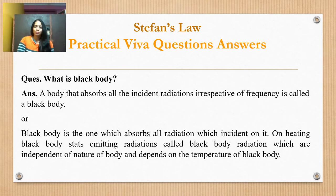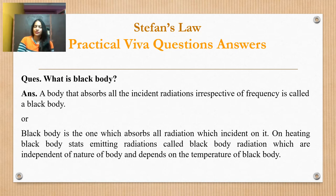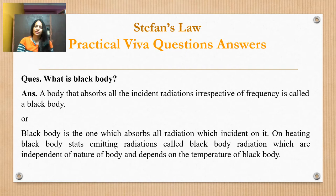On heating a black body, it starts emitting radiation called black body radiation, which are independent of the nature of the body and depend on the temperature of the black body. When we heat the black body, there are radiations from various wavelengths, and as we keep increasing the temperature, the intensity and density of the emitted radiation also increases. This is called the black body spectrum.